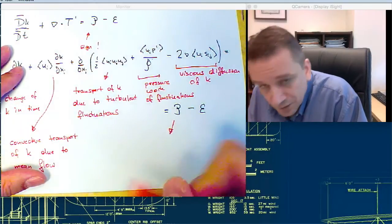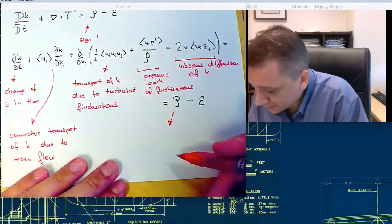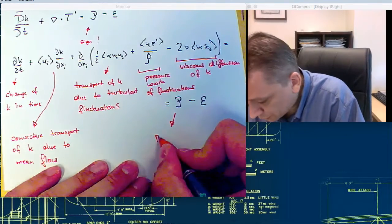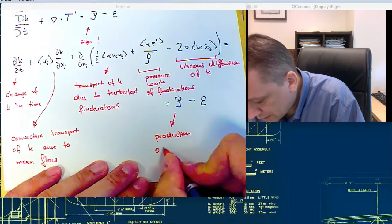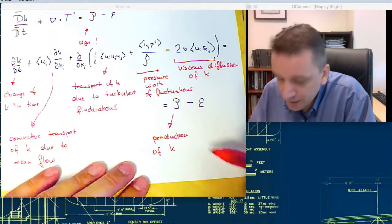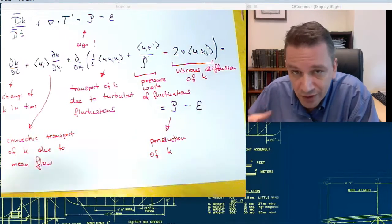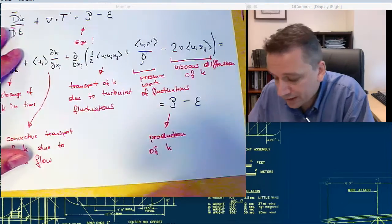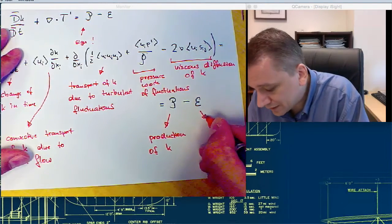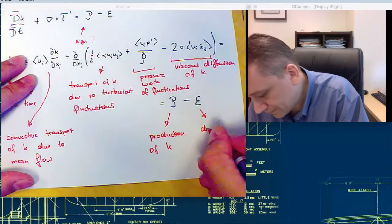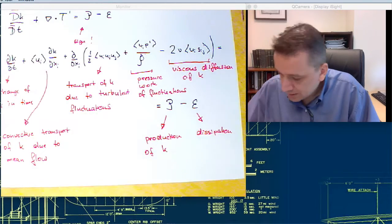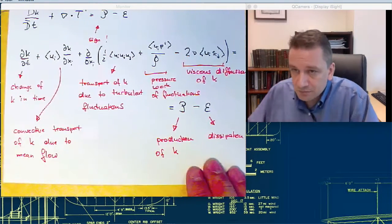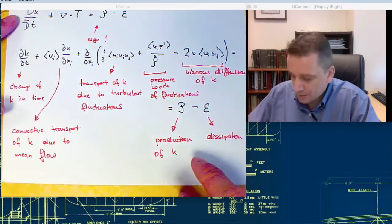Then this one, we had already a look at the mean energy. This one is a production term, the production of k due to the mean flow field. This is essentially the energy that's been transferred heading down. And this one is a dissipation.